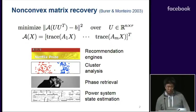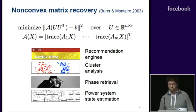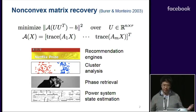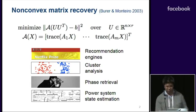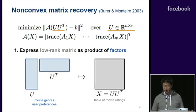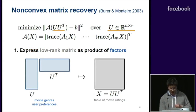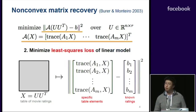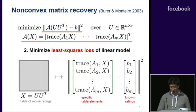Our paper studies the non-convex matrix recovery problem, which naturally arises in recommendation systems but has a variety of other applications in engineering. The basic gist of the problem is to express a low-rank matrix as the outer product of low-rank factors and to minimize the least squares loss of a linear model of the low-rank matrix.